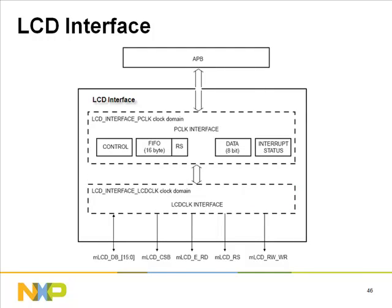The LCD interface contains logic to interface to 6800 and 8080 compatible LCD controllers with 4, 8, and 16-bit modes, and also supports a serial interface mode. Note: a system using the LCD interface cannot have external SDRAM since external memory address lines are shared with LCD interface lines. Key features include selectable frequencies for high and low speed LCD controllers, polling of the busy flag to offload the CPU, a 16-byte FIFO for control and data, maskable interrupts, and DMA transfer support.